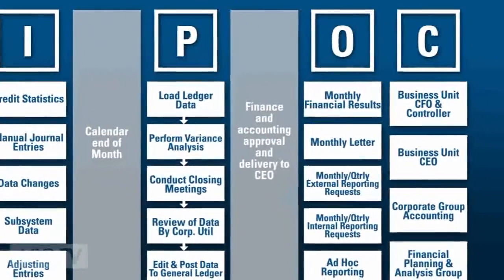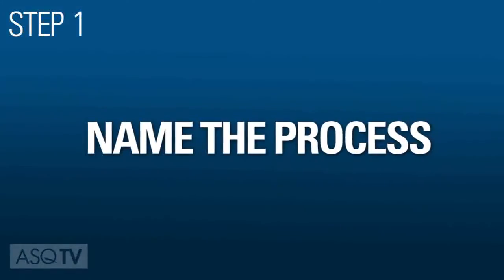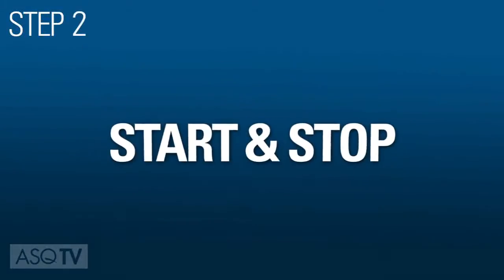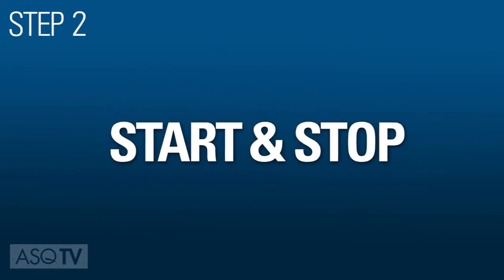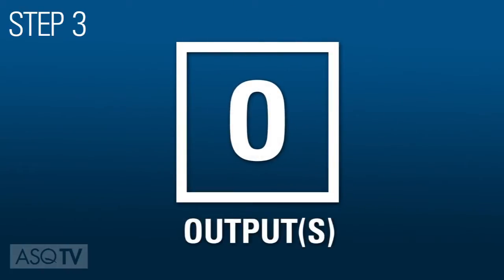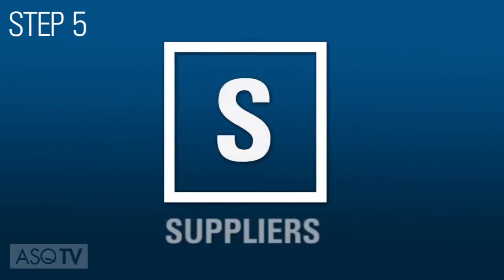To create and use a SIPOC diagram, begin by naming the process. Then, indicate the start, stop, or the scope. Clearly define the output and what must be accomplished. List the customers and whom the process affects or benefits, and the suppliers of the process.